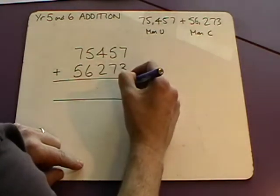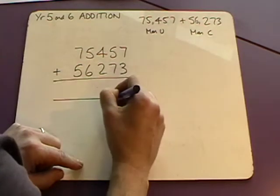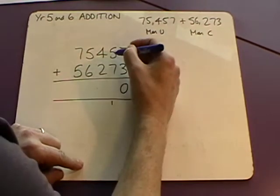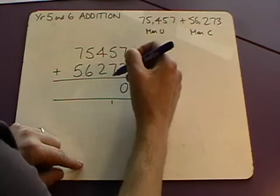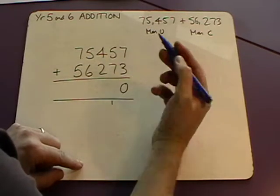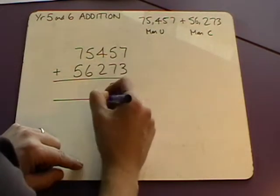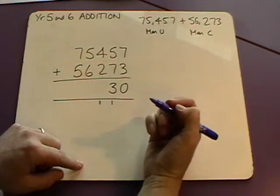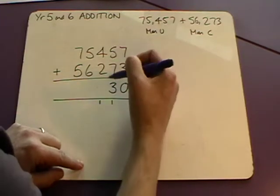7 and 3 is 10 so we're going to put 0 there and carry 10 there. Then we've got 5 and 7 which is 12 plus 1 is 13 so we can put a 3 there and carry that 1 across into there, 100 into there.